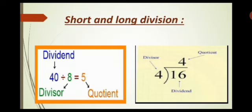One important thing you must know about the terms we mostly use in division. First, 40 is the dividend — the number which is to be divided is called the dividend. Then you can see the division sign, and after that the number 8, which is called the divisor. A divisor is the number that divides another number. When we divide 40 by 8 we get 5, and in a division sum we call the answer the quotient.